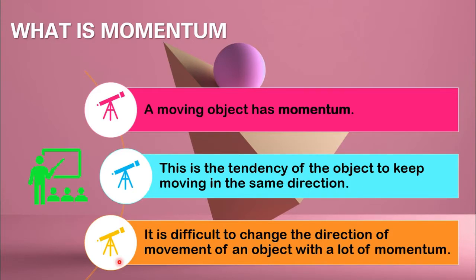At the beginning, let's see what is Momentum. A moving object has momentum. When an object is moving, it has velocity and it has mass. So when an object is moving, it has momentum.